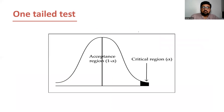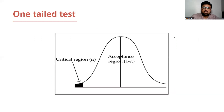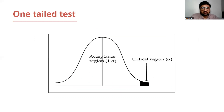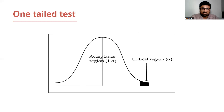See the critical region — it is on one side only, either on the right side or on the left side. Here the critical region is on the left side, and in this figure the critical region is on the right side. So if our sample statistic lies in the critical region, we reject the null hypothesis, and if it does not lie in the critical region, we fail to reject the null hypothesis.